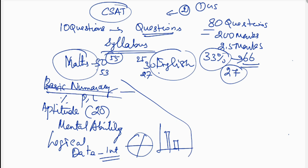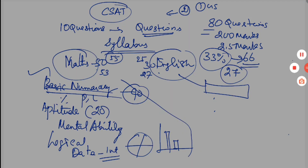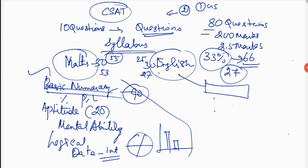In data interpretation, if a paragraph is given, you can expect 1 to 3 questions based on it. For English questions, you can expect questions testing interpersonal skills, communication skills, decision making, and problem solving.